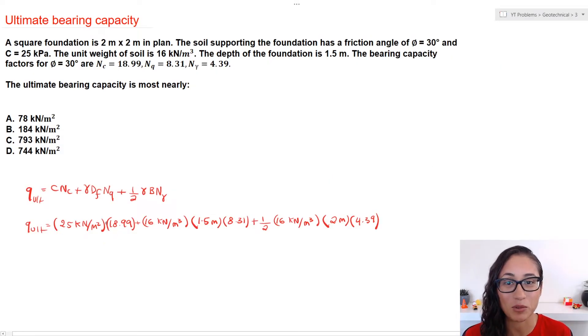Now let's plug in the numbers in the equation. So C is equal to 25 kilopascals. Note guys that kilopascal is the same thing as kilonewtons per meter squared. For gamma, I use 16 kilonewtons per cubic meter. If we were given the saturated unit weight, make sure you guys find the effective unit weight by subtracting the water. And then for D, it's 1.5 meters. That's the depth of the foundation.